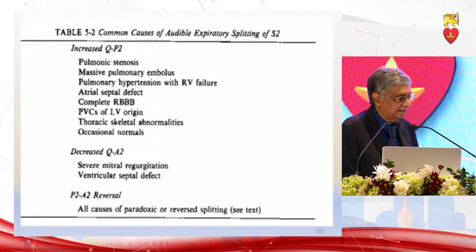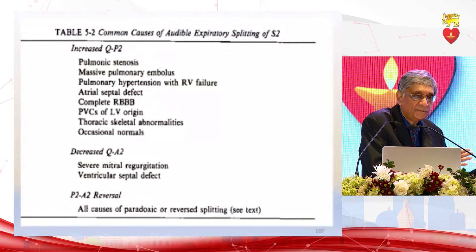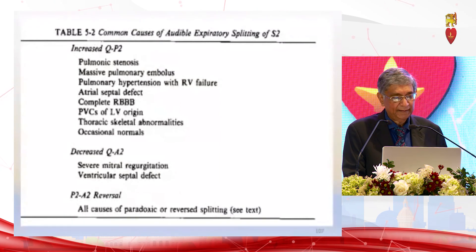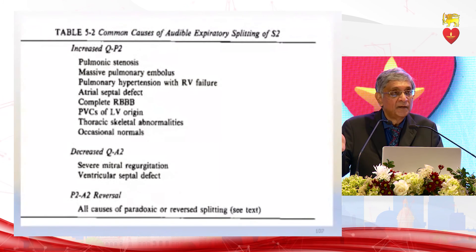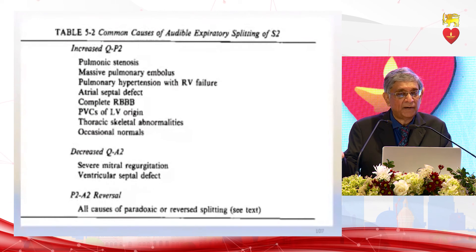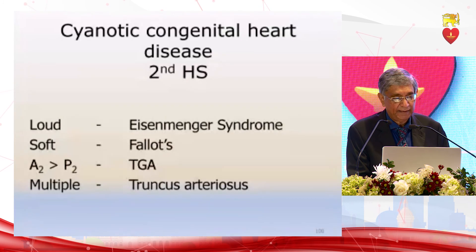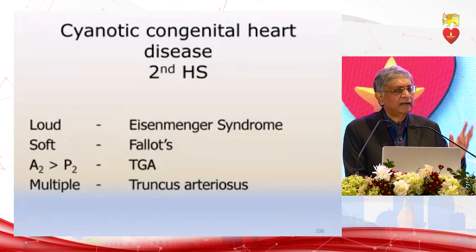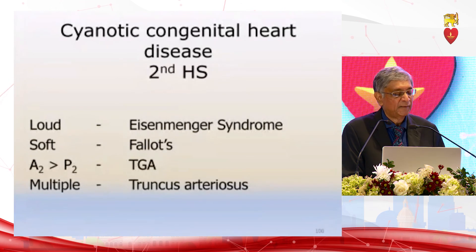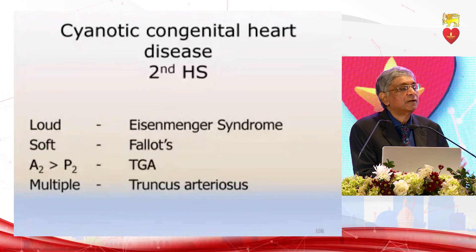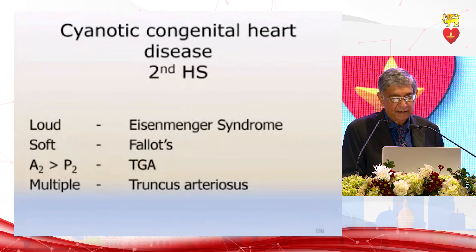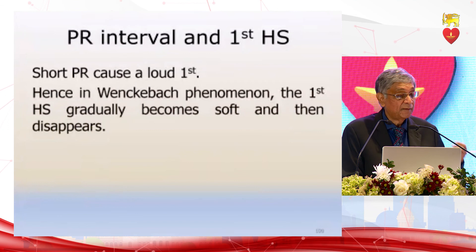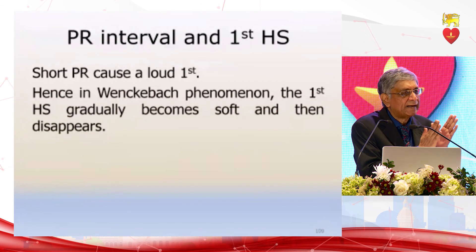Wide splitting of the second heart sound can be due to an early aortic component or a late pulmonary component. An early A2 occurs in severe mitral regurgitation because blood leaves the left ventricle more readily; a late P2 occurs in atrial septal defect, right bundle branch block, pulmonary embolism, or pulmonary stenosis because P2 is delayed. If the second heart sound is very loud in congenital heart disease, think Eisenmenger syndrome. If it is soft, think Fallot's tetralogy due to severe pulmonary stenosis. If A2 and P2 are reversed, think transposition of the great arteries.